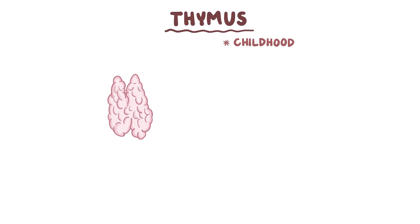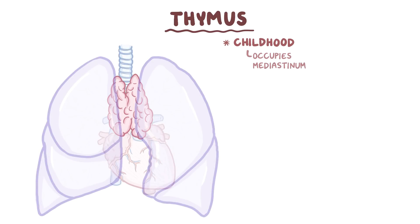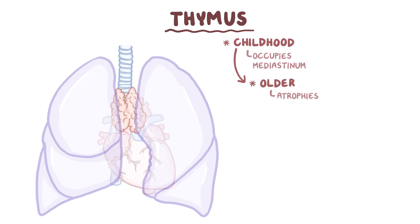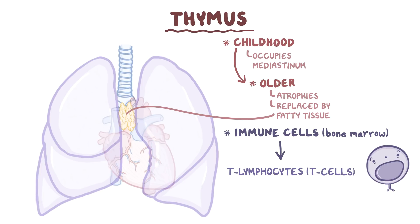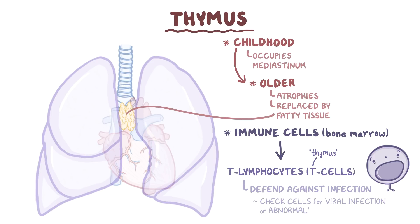During childhood, the thymus occupies considerable room behind the sternum, in a part of the chest known as the mediastinum — a space in the chest between the lungs that also contains the heart. But when people get older, it atrophies and is replaced by fatty tissue. It's here in the thymus where certain immune cells from the bone marrow mature into T lymphocytes, or T cells, where the T stands for thymus. Once mature, these T cells help defend the body against infections by activating other cells of the immune system, as well as checking the body's cells for viral infection or abnormalities like cancer.